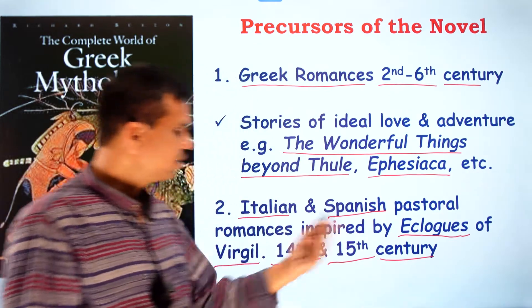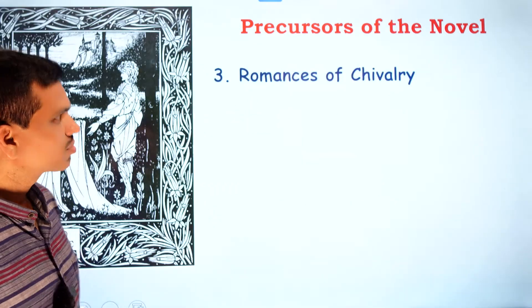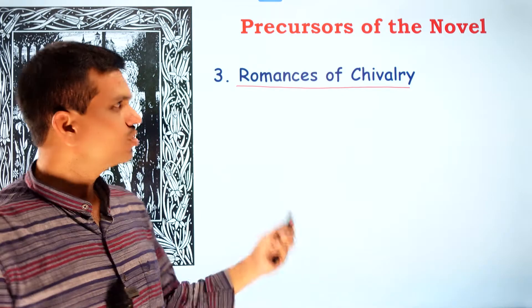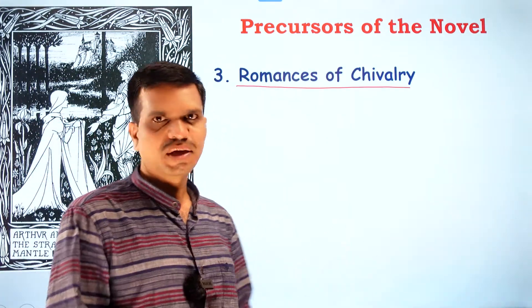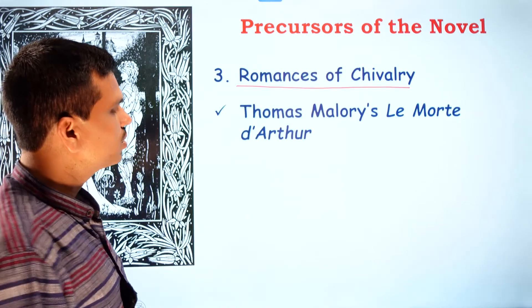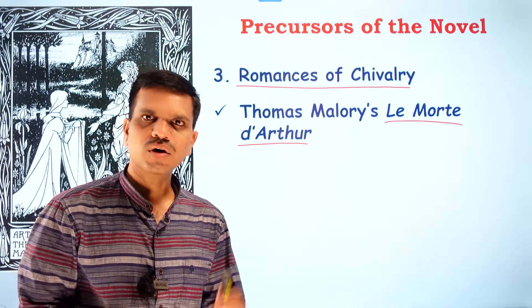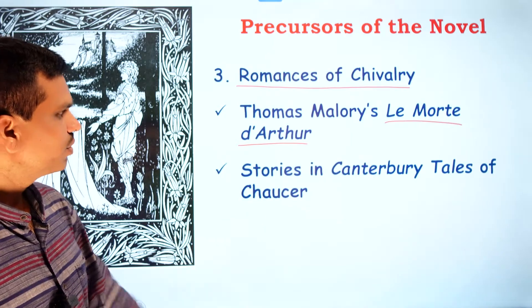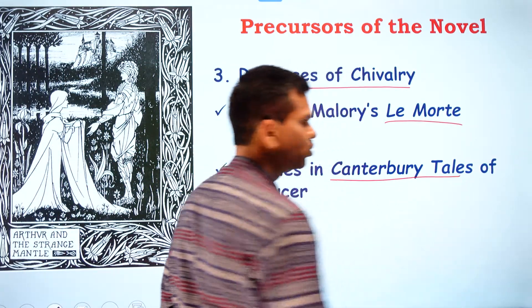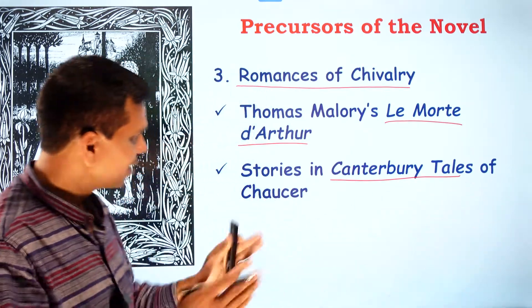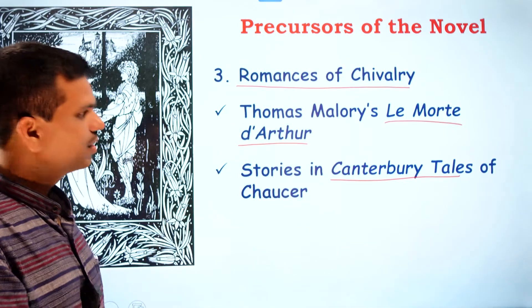The third precursor is the romances of chivalry in England. After Greek romances and Italian and Spanish romances, England developed romances of chivalry. Thomas Malory's Le Morte d'Arthur is a very famous romance in this tradition. Some stories in Geoffrey Chaucer's Canterbury Tales also stretched this tradition of storytelling, and these can be considered precursors or predecessors to the modern English novel.